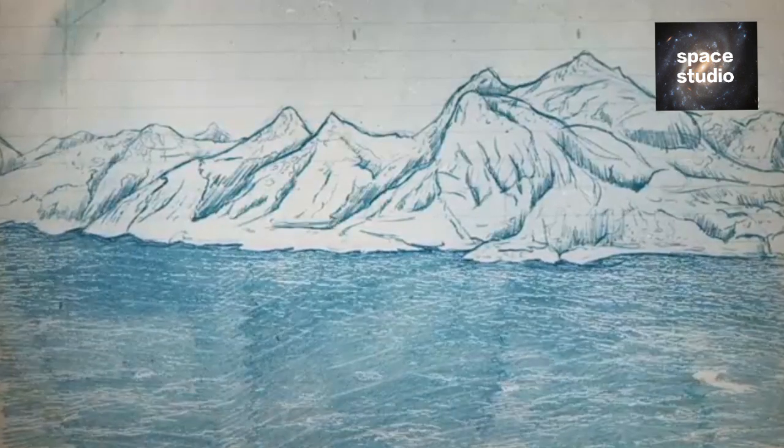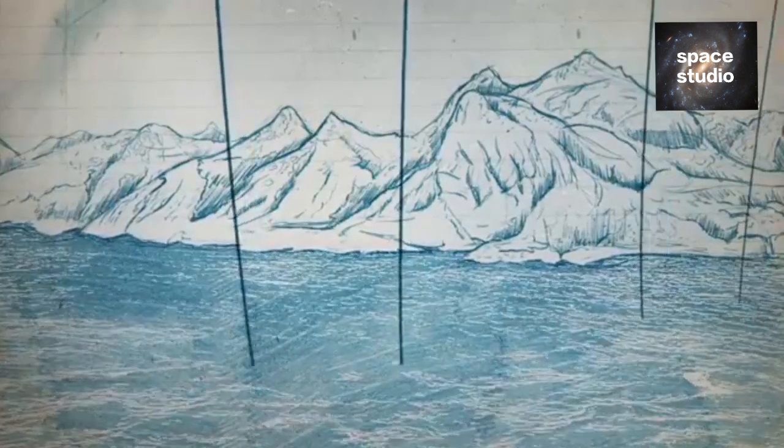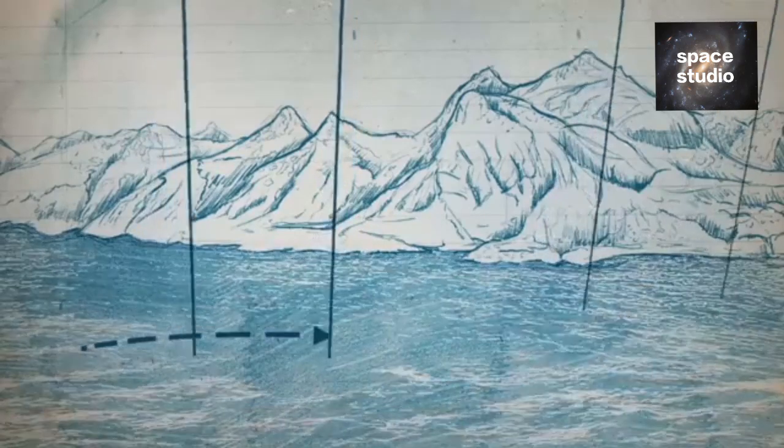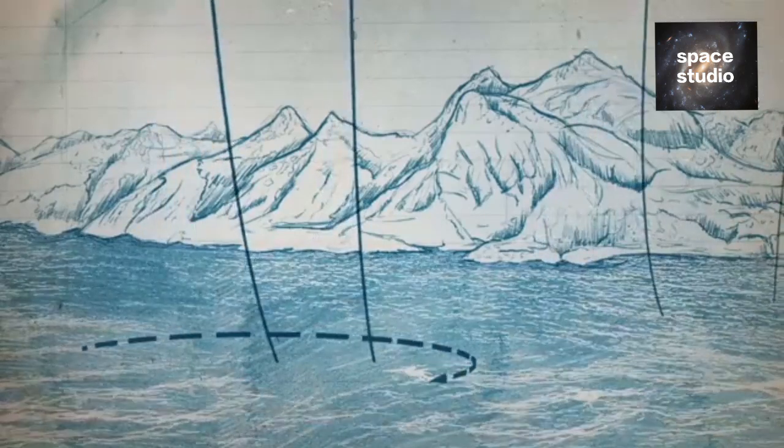One such source is the motion of the ocean. As the ocean flows, the field lines feel a pull and are dragged along a little. The back and forth of the tides cause a small wiggle in the magnetic field.